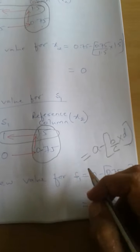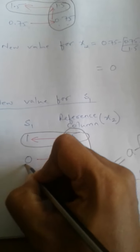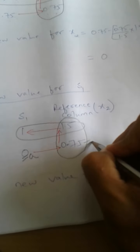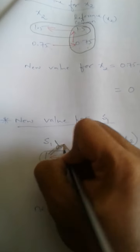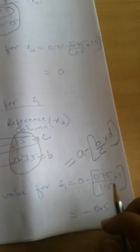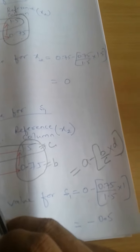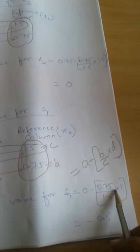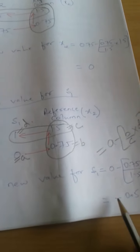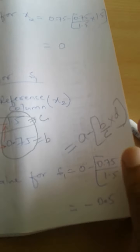When calculating the new value, we consider this as A, this as B, this as C, and this as D. We have the equation A minus B divided by C into D. That gives us 0 minus 0.75 divided by 1.5 into 1, and the answer we get is minus 0.5. This is the new value for S1 which we are going to write in the next table.